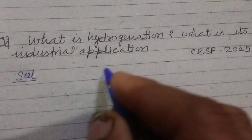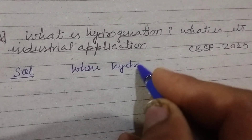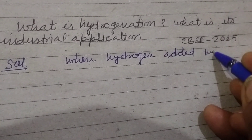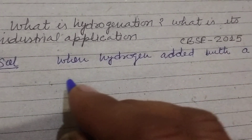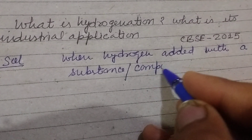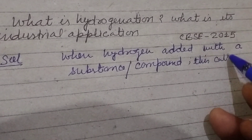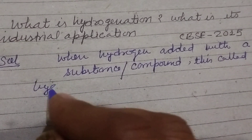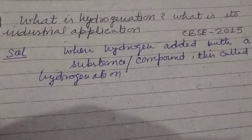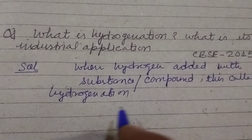The answer to this question is: when hydrogen is added with a substance or compound, this is called hydrogenation. When an unsaturated compound is added with hydrogen, it gives a saturated compound.